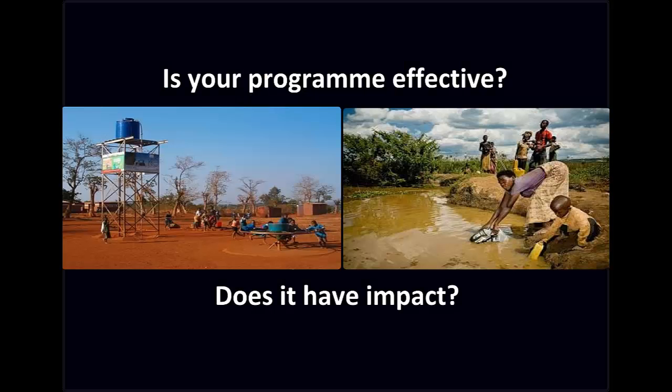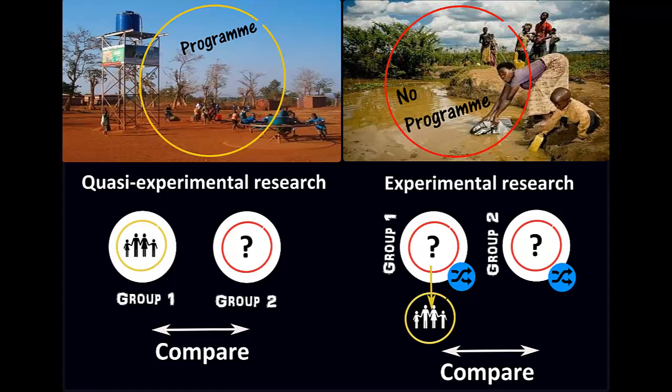Last on the list of what we try to measure through monitoring and evaluation are questions around program efficiency and impact. You measure the impact or efficiency of your program by establishing what the status of things would have been if your program was never implemented. Researchers call this the counterfactual. However, how things would have been is clearly impossible to measure directly — it can only be inferred. One way of inferring this is by comparing the outcomes of those who participated in the program against those who did not participate, using either experimental or quasi-experimental research.